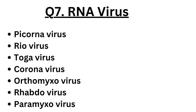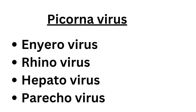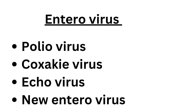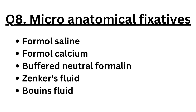Question number seven: RNA viruses. These include Picornavirus, Reovirus, Togavirus, Coronavirus, Orthomyxovirus, Rhabdovirus, and Paramyxovirus. Under Picornavirus, the classified viruses are enterovirus, rhinovirus, hepatovirus, and parechovirus. Under enterovirus: poliovirus, Coxsackievirus, echovirus, and new enteroviruses. The classification is a little tough so you have to study well.